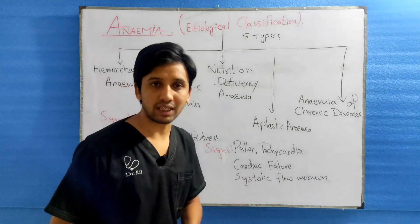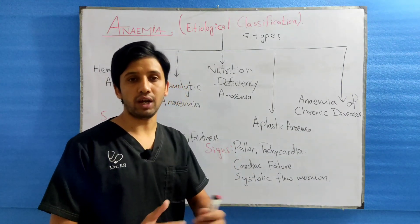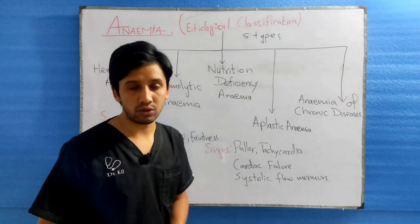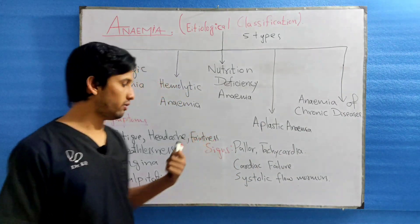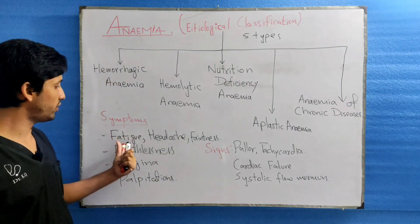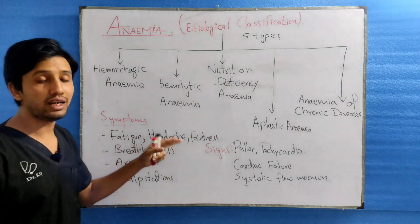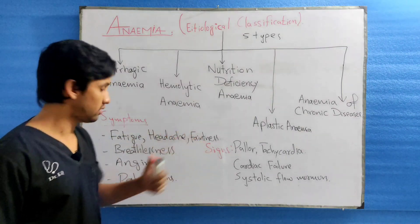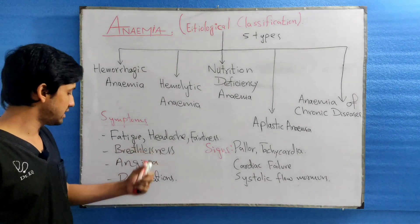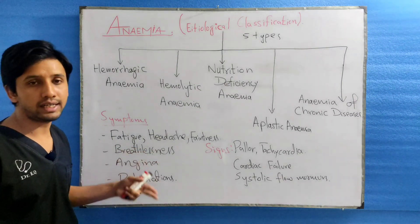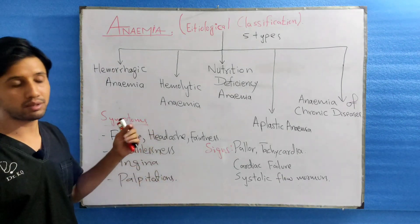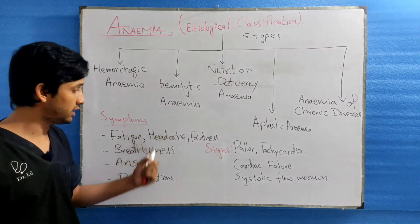Now we are going to discuss the clinical features of anemic patients. A patient comes with the following signs and symptoms. The first symptoms include fatigue, headache, and faintness. The second group includes breathlessness, angina, and palpitation. These are all the symptoms of an anemic patient.